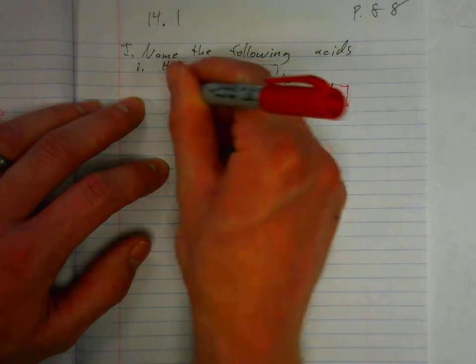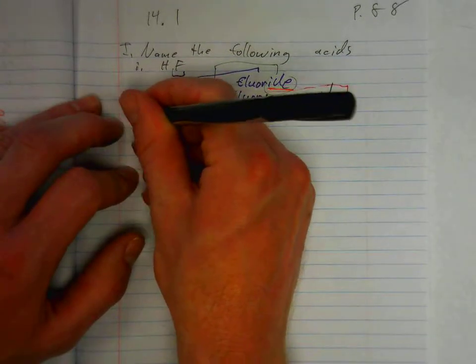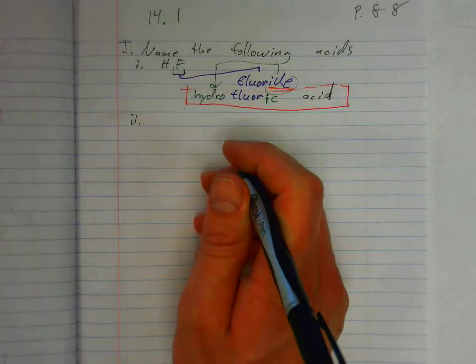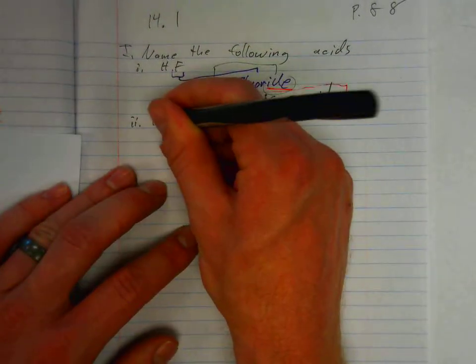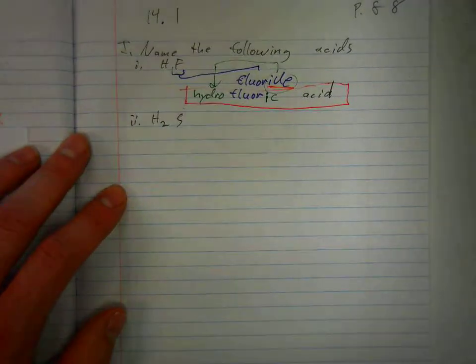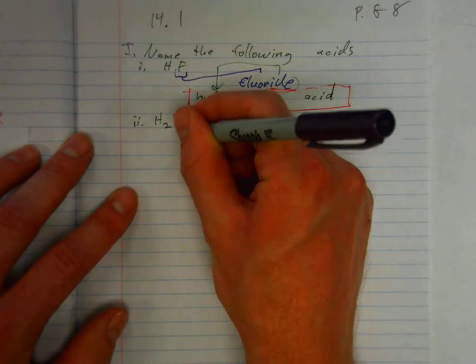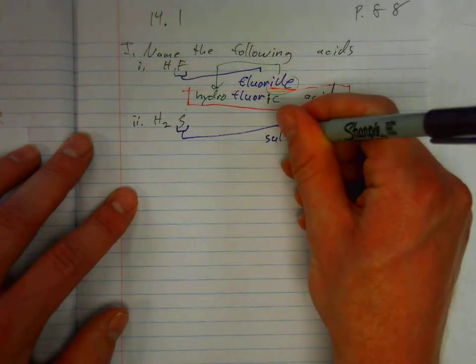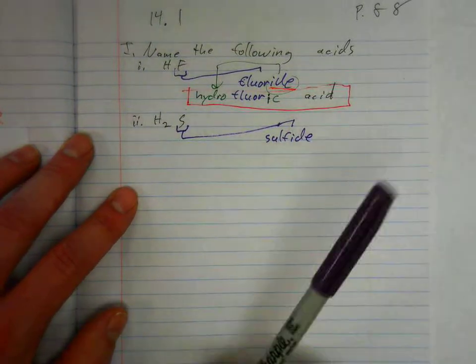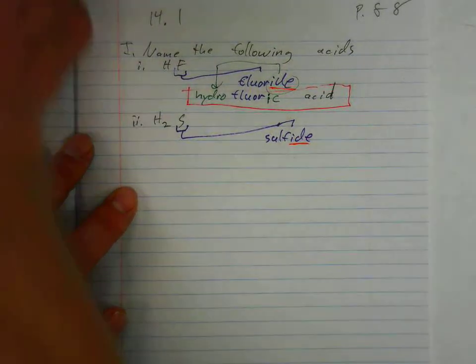Next one, H2S. We identify the anion. We have sulfide for the anion. This ends in IDE. So the rule again is hydro stem ic.